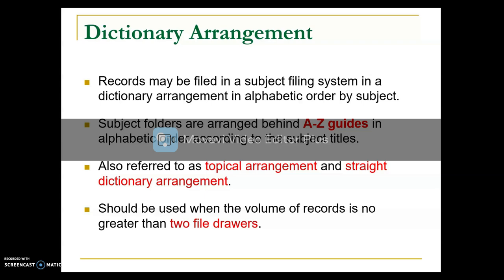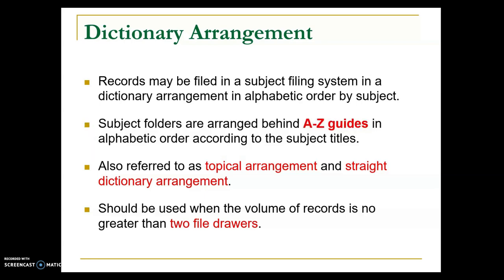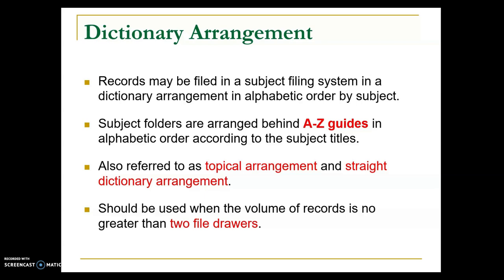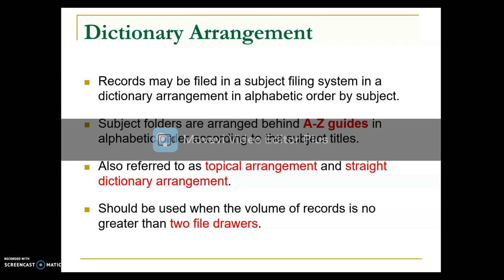Records are retrieved by direct access, as compared to numeric and geographic filing where direct access is difficult if you don't know the assigned number. With subject filing, retrieval is easier since we know the subject of the file. The filer can locate records by referring directly to the captions on the cards and folders. However, a subject list is helpful when indexing and coding to ensure correct subjects are assigned.